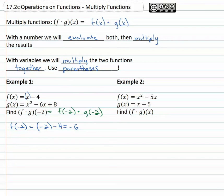g of negative 2 then. We're plugging negative 2 into the g function for both of the x's, so we have negative 2 squared minus 6 times negative 2 plus 8. First we have to square and multiply giving us 4 plus 12 plus 8, when we add those together we get 24.